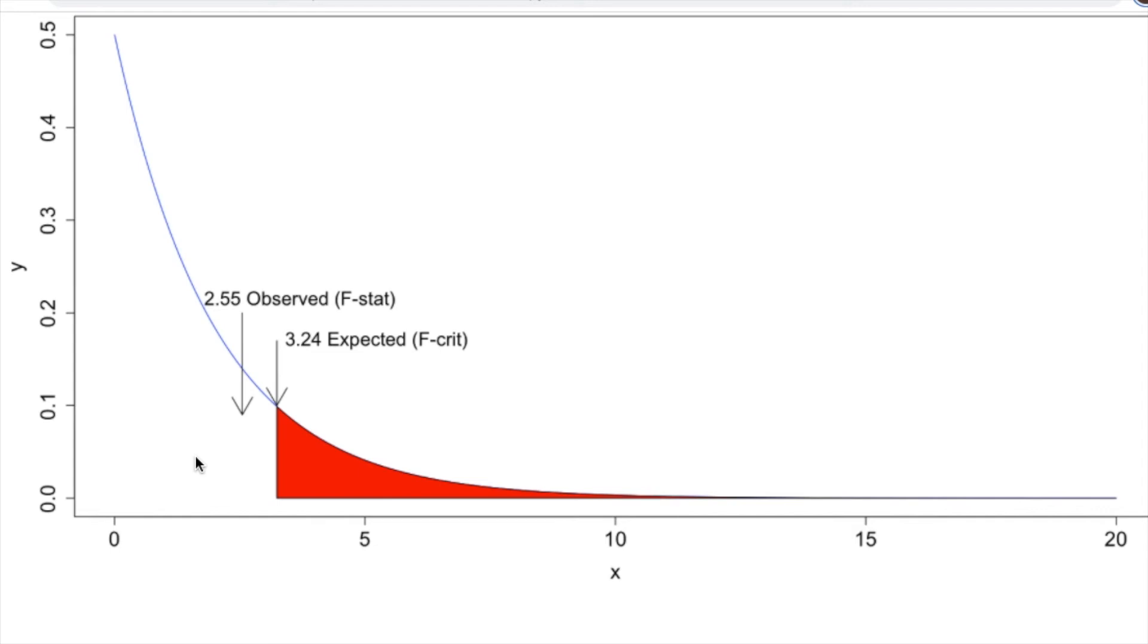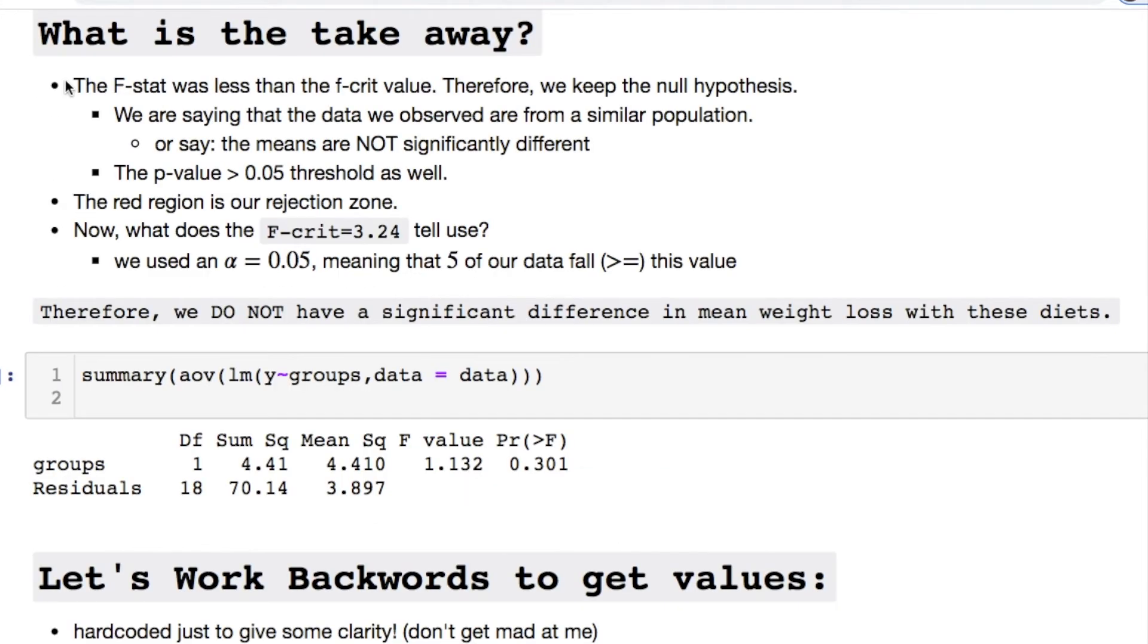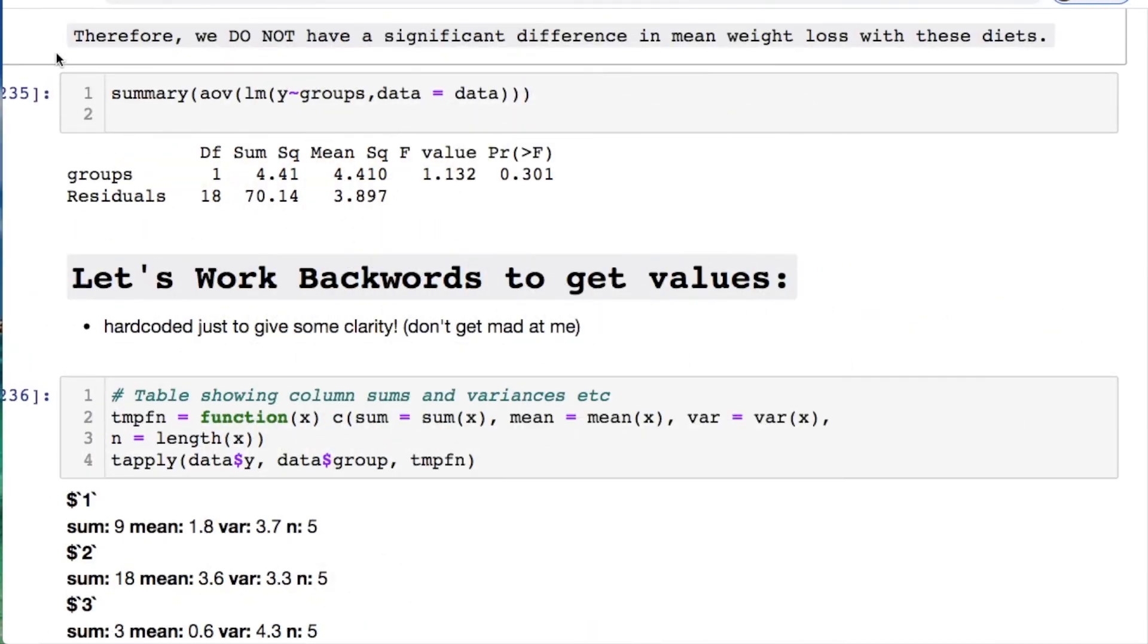So what is the interpretation from our exercise? Well here's the takeaway. The f stat was less than the f critical. We keep the null hypothesis. Otherwise do not reject. We're saying that we observe these data from a similar population. Or we say that the means are not significantly different. You can also do the comparison. There's two ways doing the comparison. This is the second. The p value is greater than the threshold for our alpha. Therefore we reject to disregard the null hypothesis. We would therefore say that we do not have a significant difference in mean weight loss with these diets.